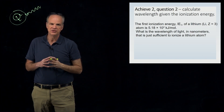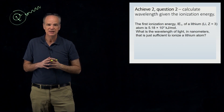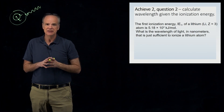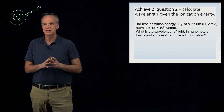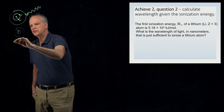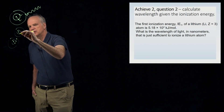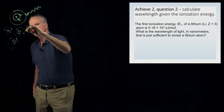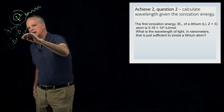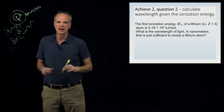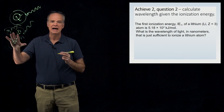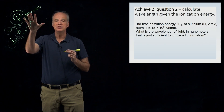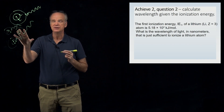One challenge in this problem is that the ionization energy is not in joules — it is in kilojoules per mole of atoms. Imagine you have a mole of lithium atoms; all of them are going to be struck by a mole of photons, and then you get a mole of electrons flying into space. The ionization energy given is 5.18 × 10² kilojoules per mole, meaning you need a mole of photons with that energy to knock the electrons off.